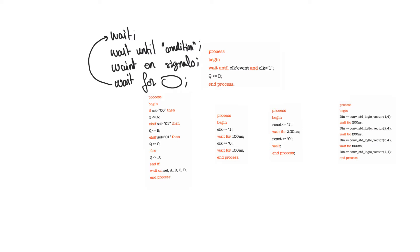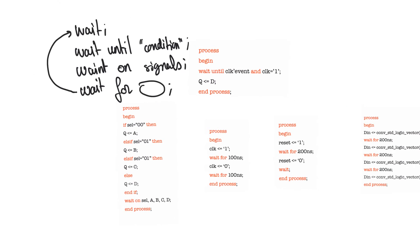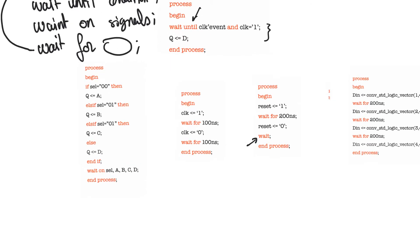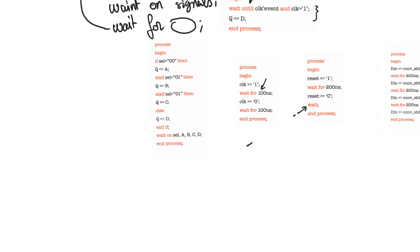In these code snippets, we see all uses of the wait statement illustrated. For example, here we see wait until, and the process is going to wait until a clock event happens and clock equals one — which actually implements a D flip-flop. Here we see the unconditional wait, which causes the process to wait indefinitely. Here we see wait for, which waits for a certain amount of time. And here we see wait on, which waits until there are changes in the list of signals that follows the 'on' keyword.